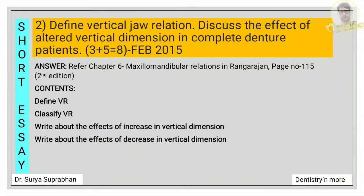Next: define vertical jaw relation and discuss the effect of altered vertical dimension in a complete denture patient. Refer the chapter on maxillomandibular relations, page number 115. First define VR, then classify VR, and then write about the effects — what happens if VR is increased or decreased.